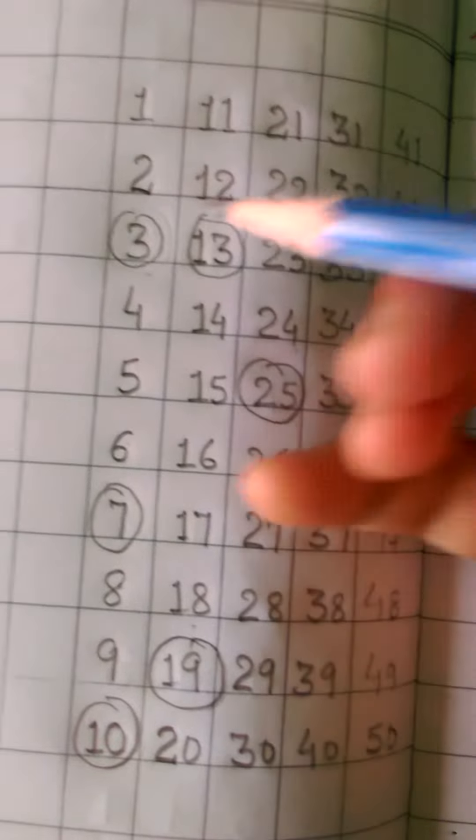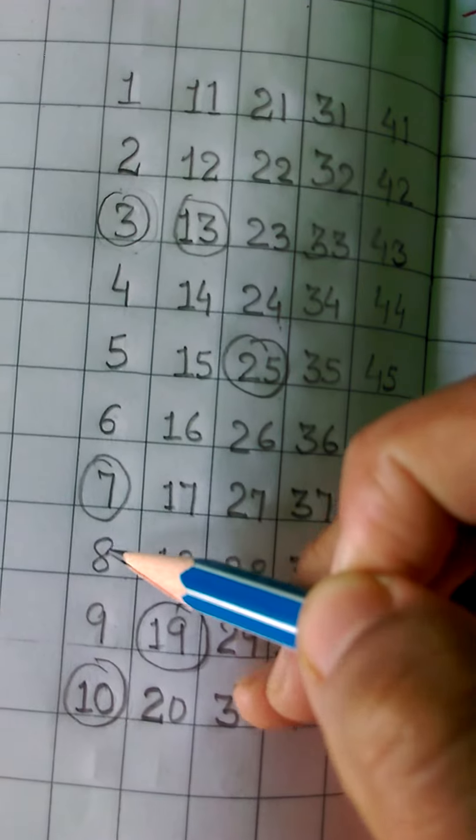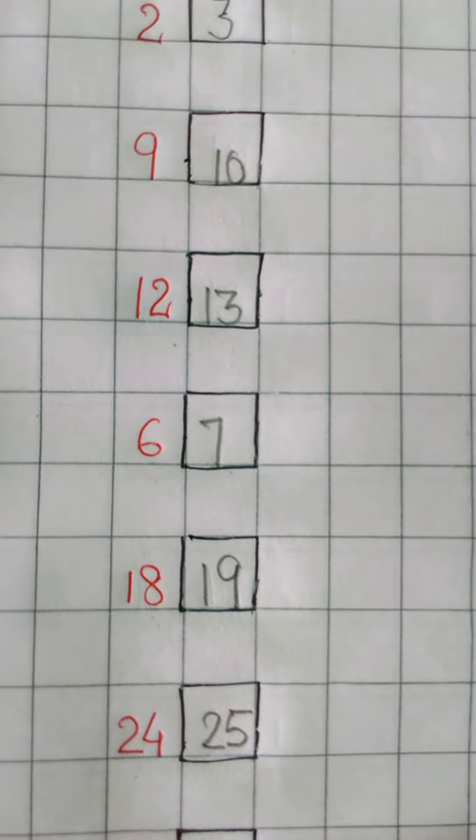Next is 7. Here we can see what comes after 7. 8. So in the box we have to write 8.